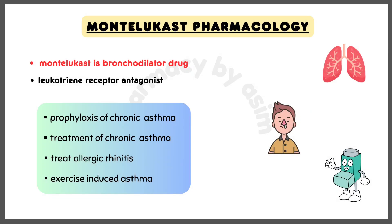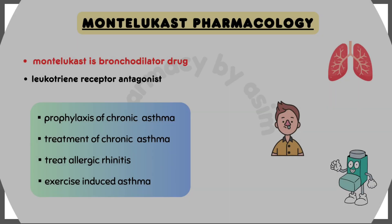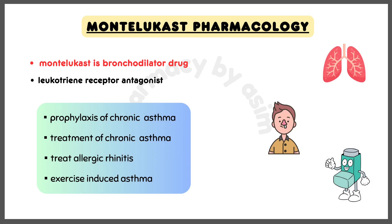Montelukast is a bronchodilator drug, classified as a leukotriene receptor antagonist. It is used for prophylaxis and chronic treatment of asthma, but it is not used to treat an acute asthma attack. Montelukast is also used to treat allergic rhinitis, and to prevent exercise-induced bronchoconstriction.